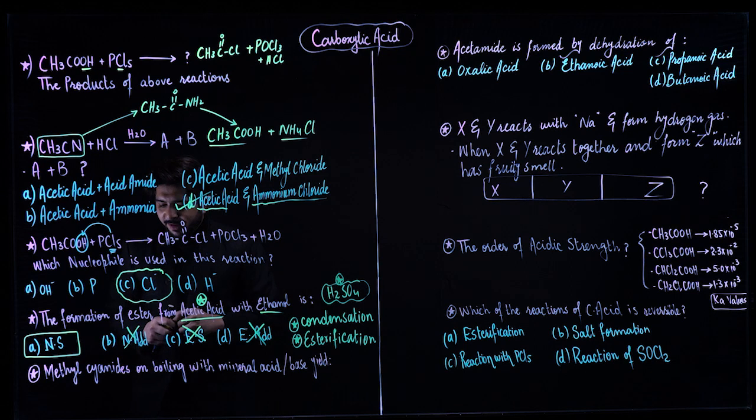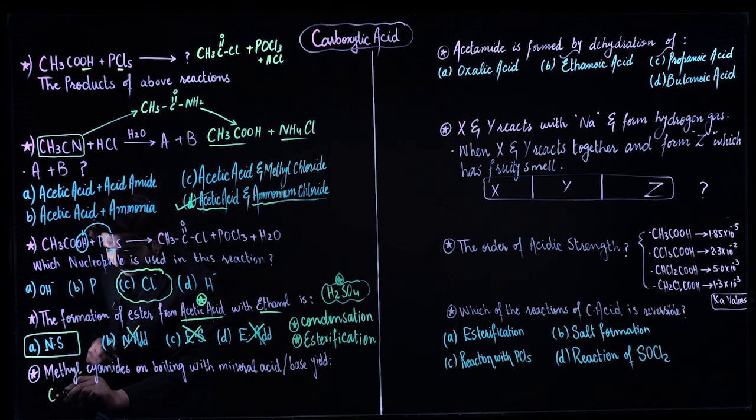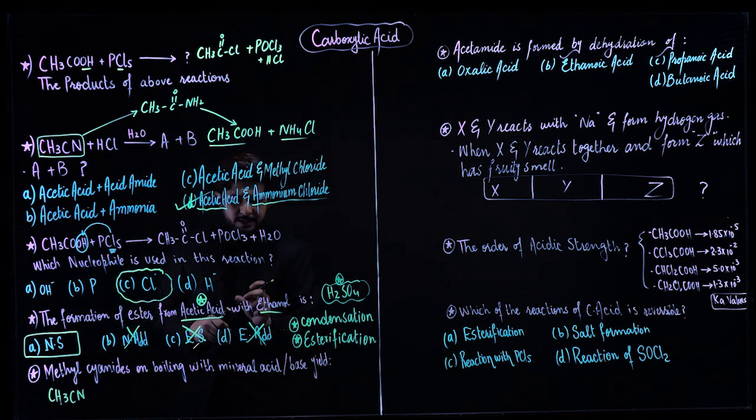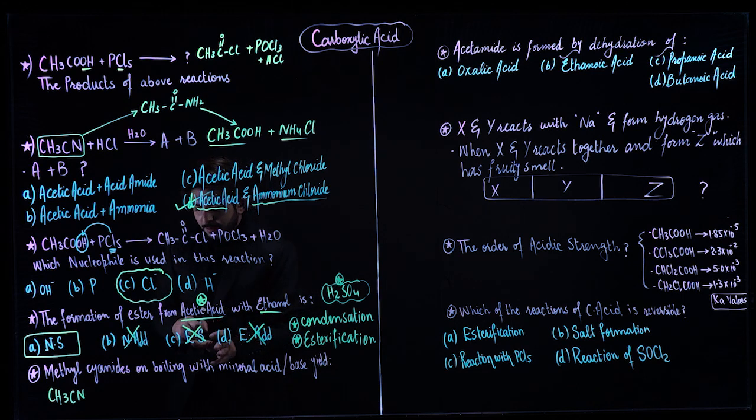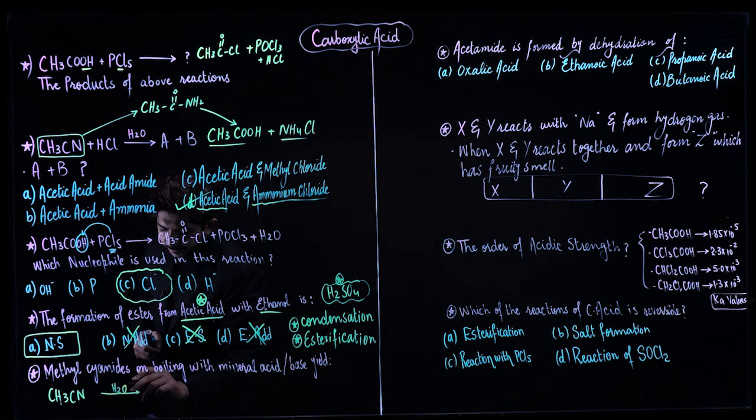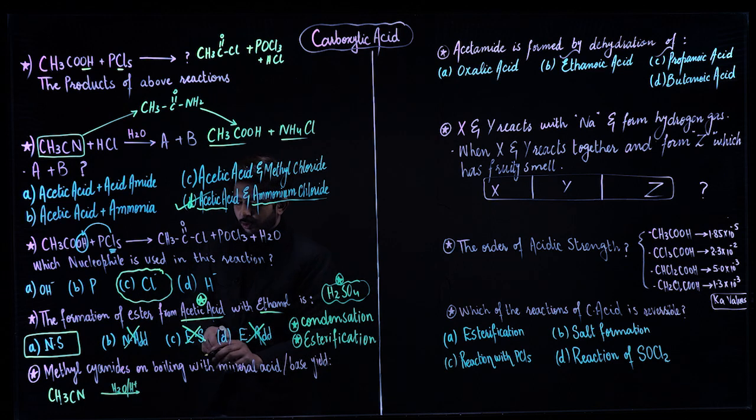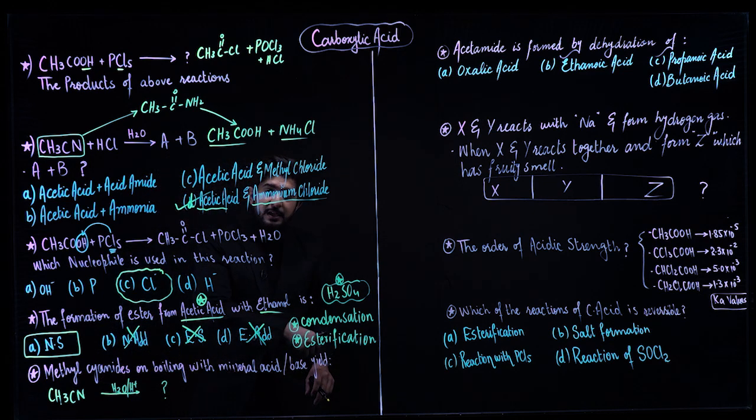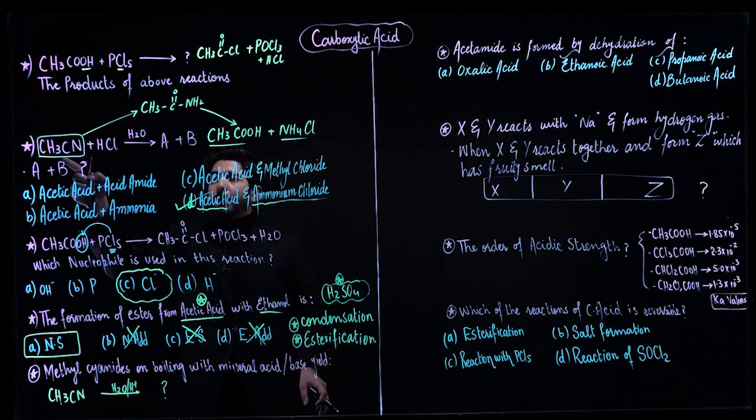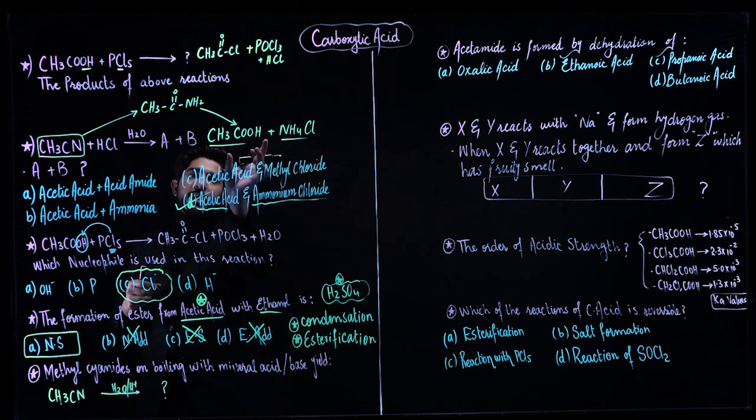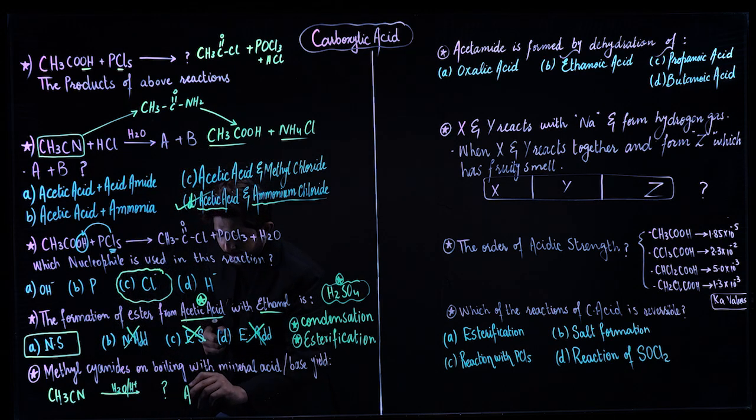Next question: methyl cyanide, that means CH3 and CN - that is methyl cyanide. On boiling with mineral acid or base, cyanides are being boiled in acidic medium. It will give you products. Nitriles or cyanides, which acid do you get? That is carboxylic acid.